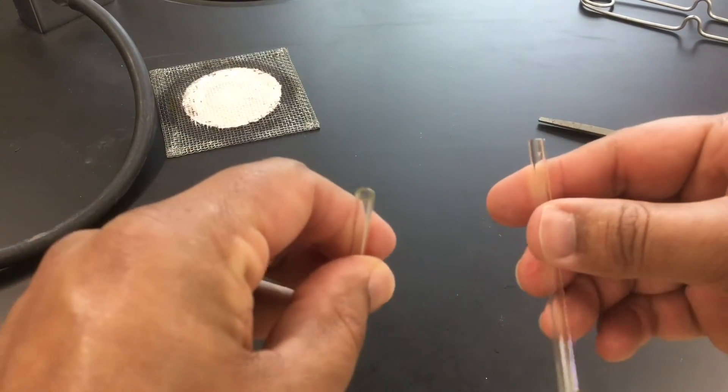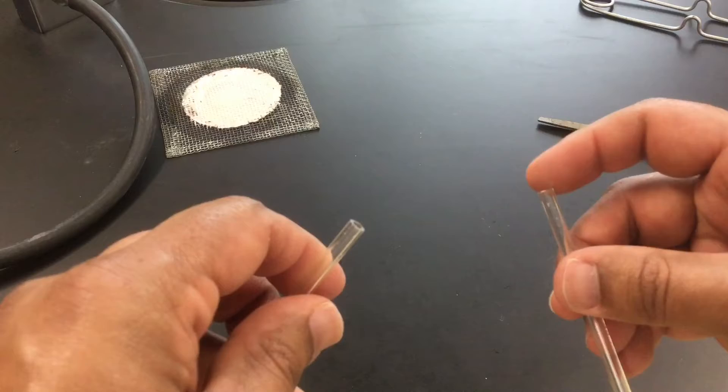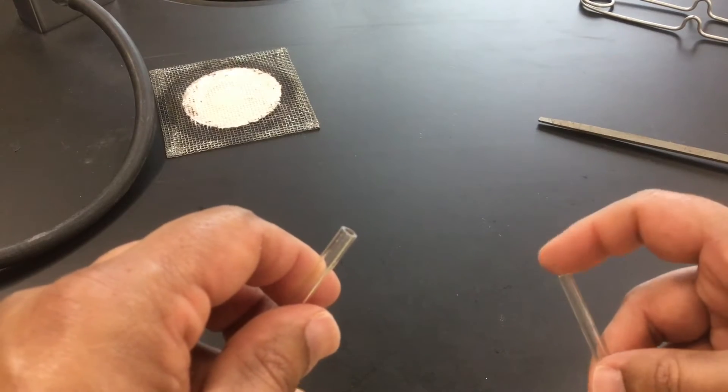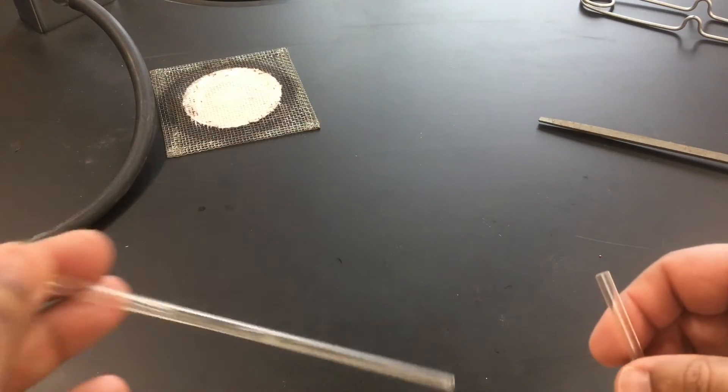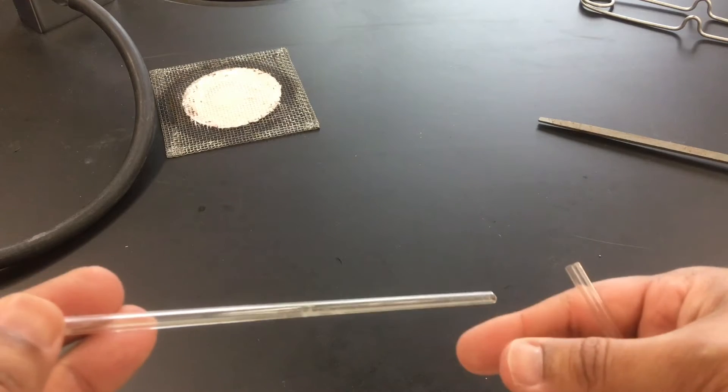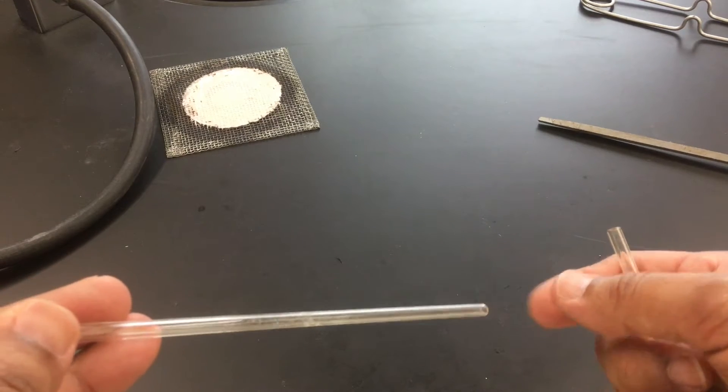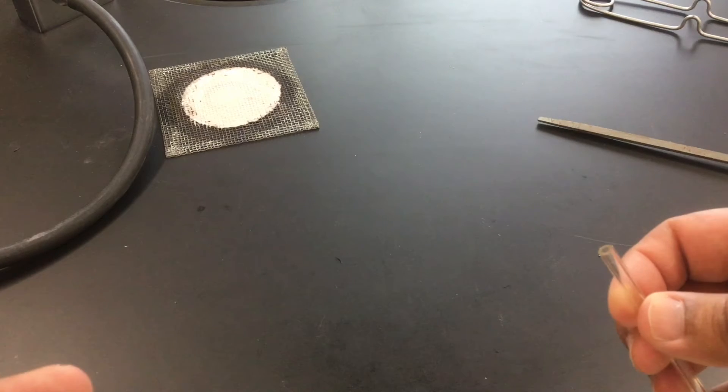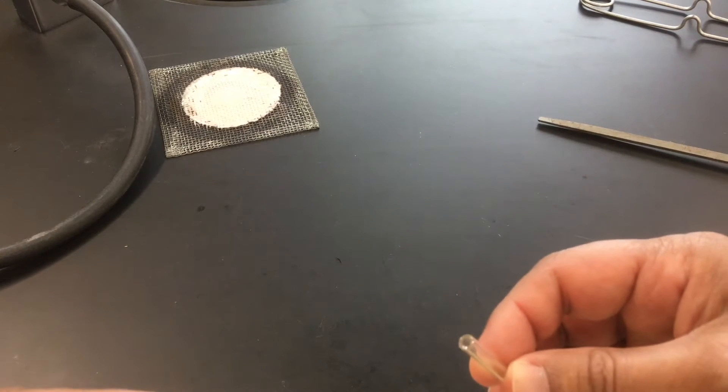Now it's not the smoothest thing in the world because if you run your finger over this you'll notice it's a little bit sharp. In fact we have two pieces of glass and both ends are rather sharp. So we're going to fire polish these pieces of glass so that they're nice and smooth.